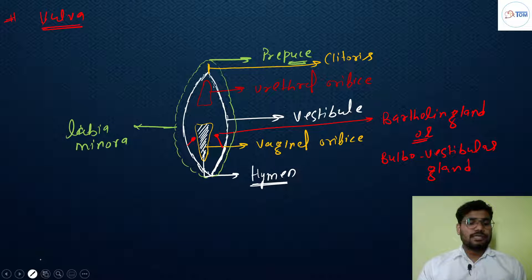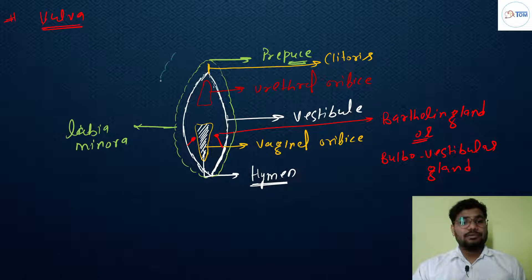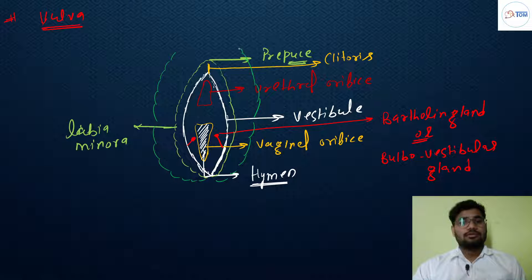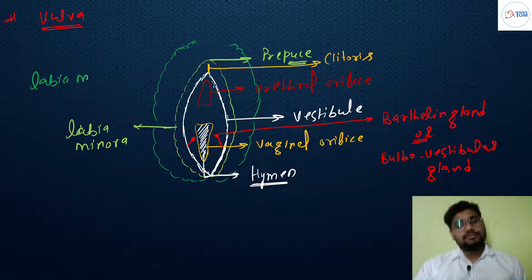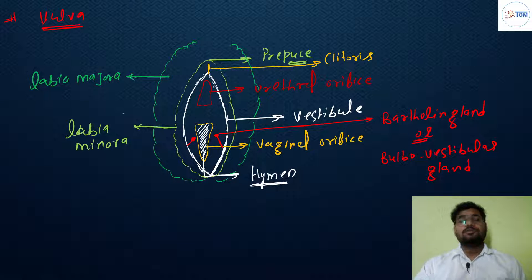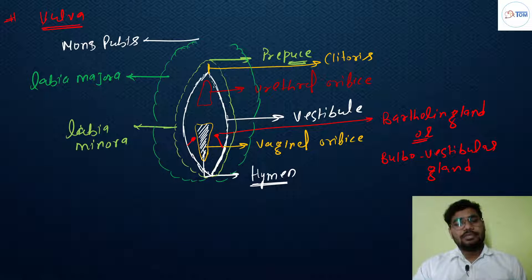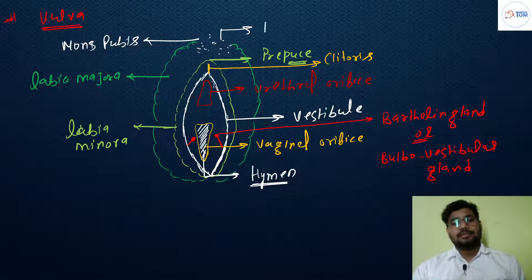There is another loose fold of skin present, called the labia majora. The labia majora is homologous to the scrotum in males. The upper side is called the mons pubis, and in the mons pubis area, pubic hairs are present.